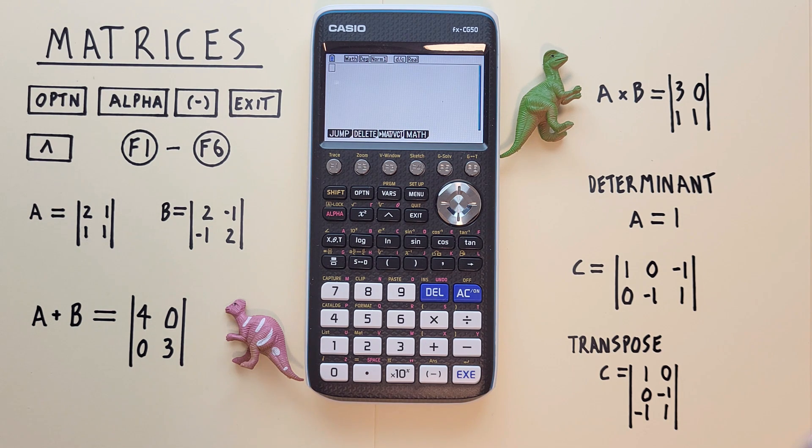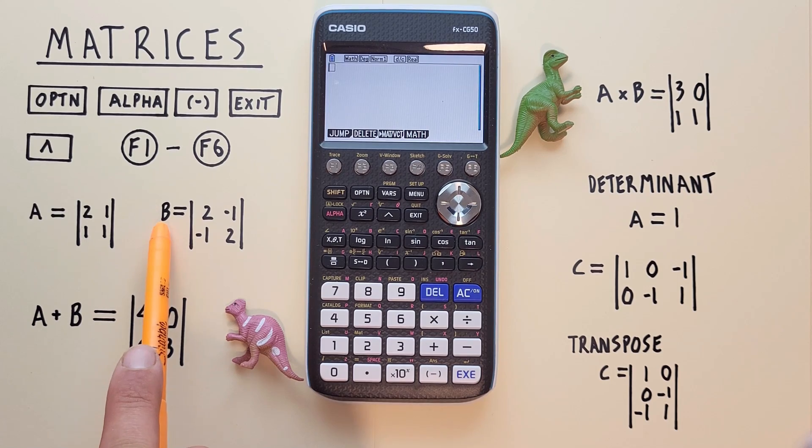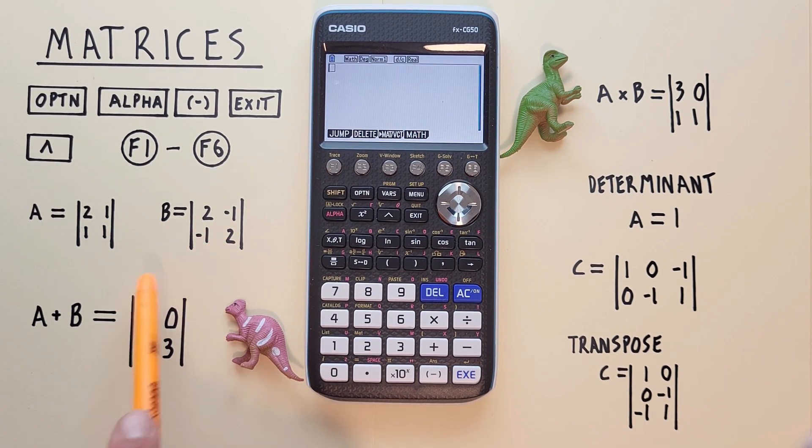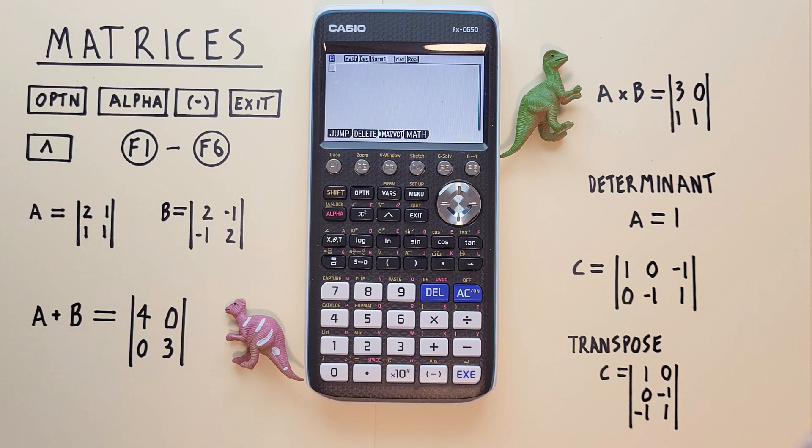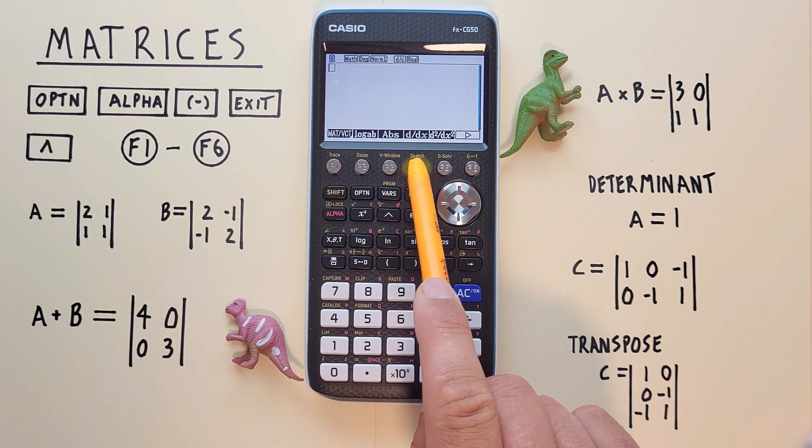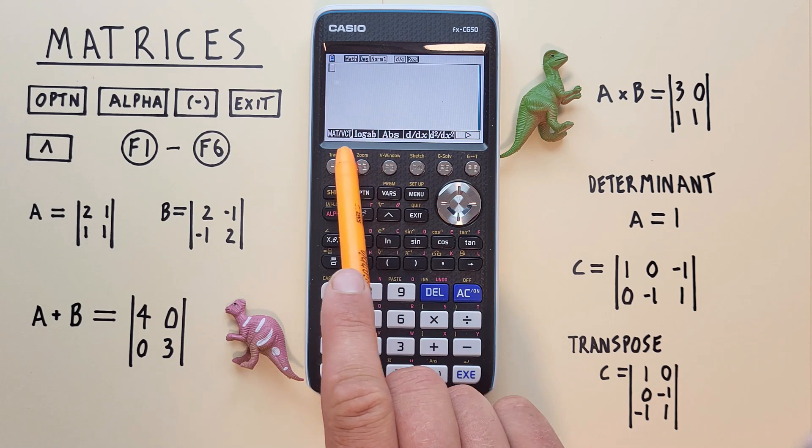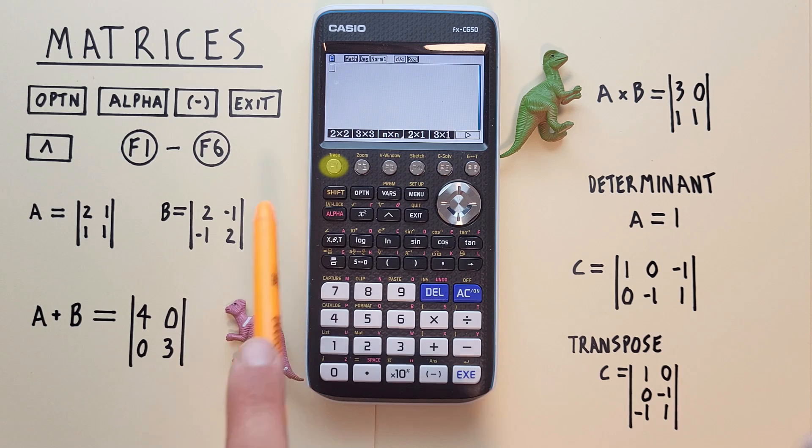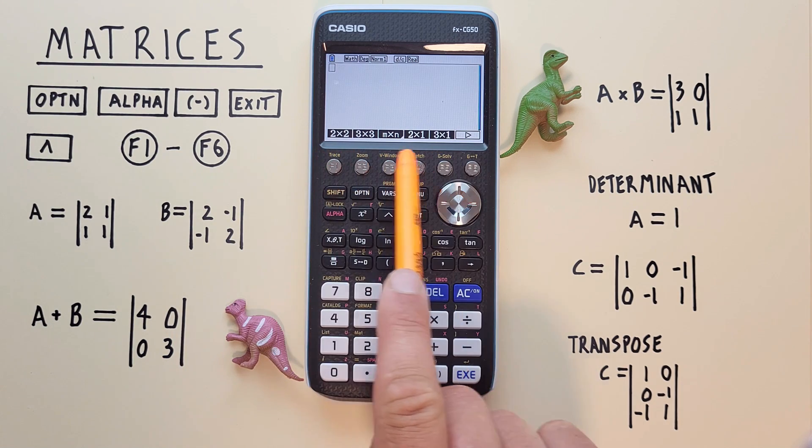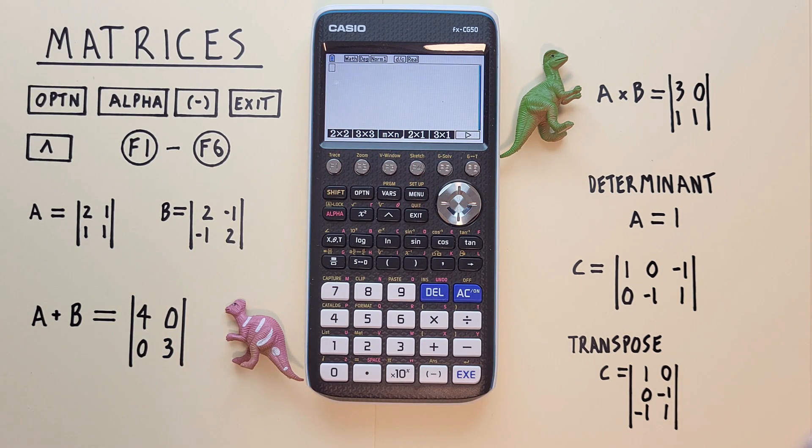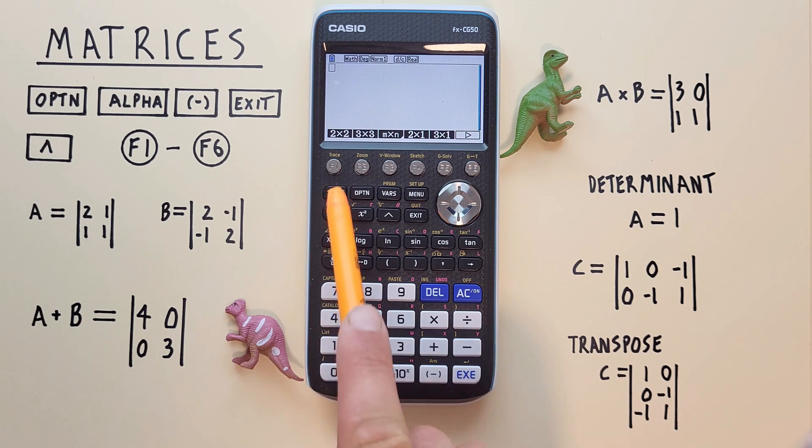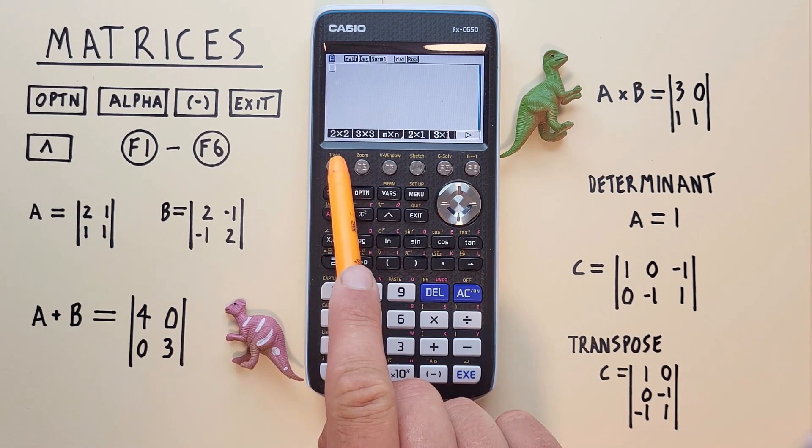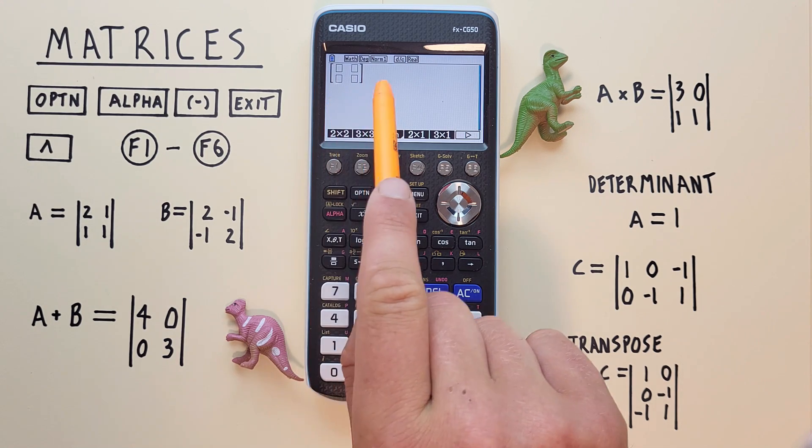Now if we want to enter a simple matrix for a one-time use, for example this A matrix which is 2×2 or this B matrix which is also 2×2, let's say we want to add them together. What we can do is go F4 so that we see this screen on the bottom and then choose F1 matrix or vector. That'll give us this menu where we can choose the size of the matrix. We want to enter a 2×2 matrix for A, so we hit that and the matrix appears on our screen ready to be entered.